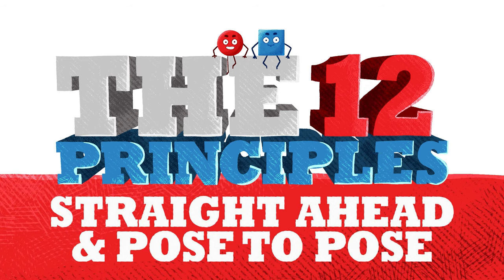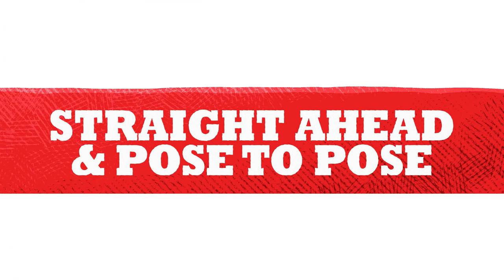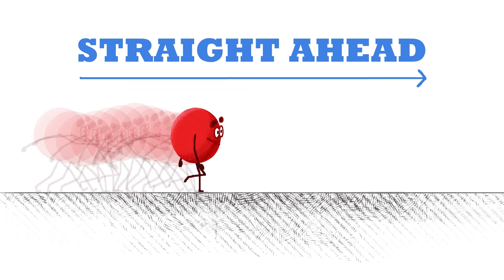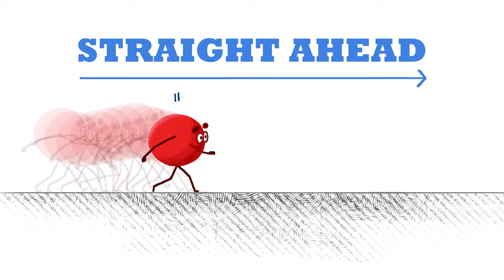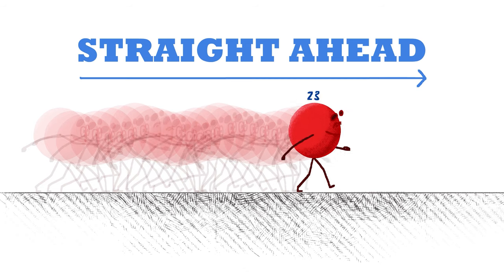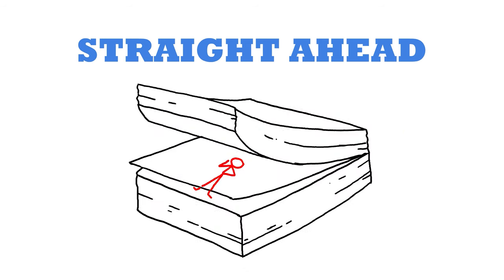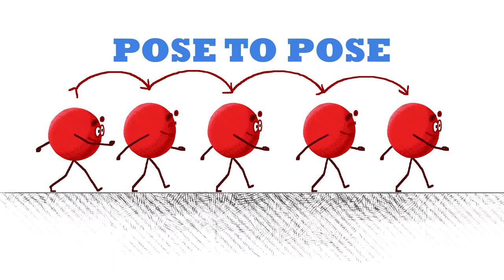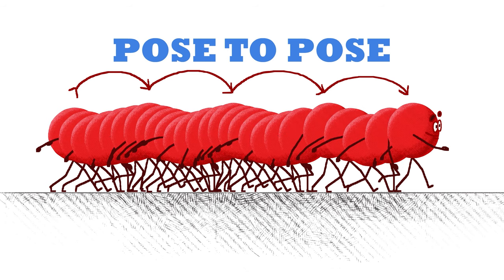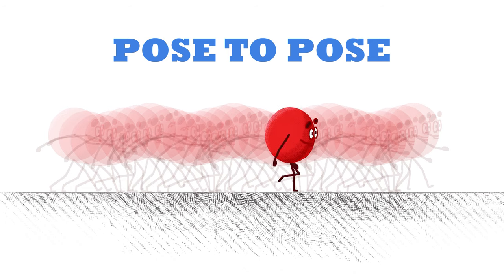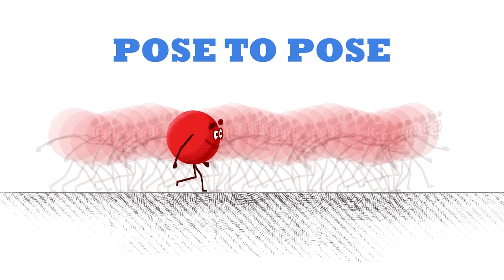Next up is straight ahead and pose to pose. The two terms describe two different methods of animation. Straight ahead animation involves drawing all of your frames in order — you start with frame one, then frame two, frame three and on and on until you complete your shot. With pose to pose, you plan out your animation by drawing the important frames first, then going back and filling in the gaps. This is great for most actions that are predictable and can benefit from planning out your actions.